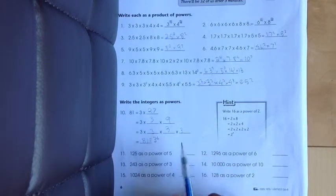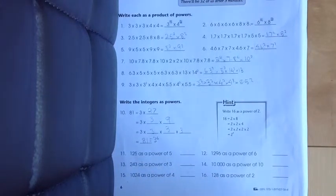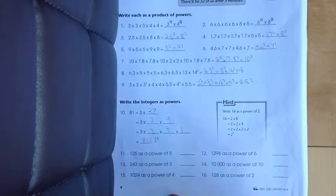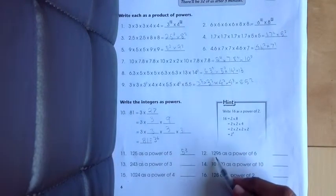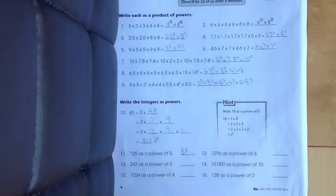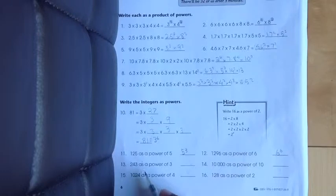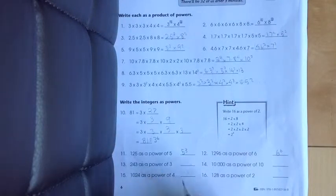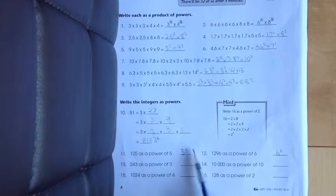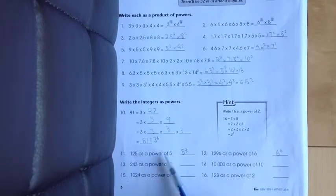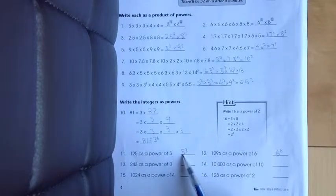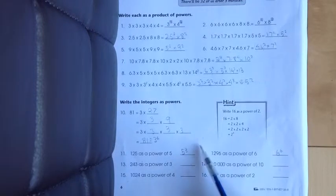Now let's move on to questions 11 to 16. 125 as a power of 5. You have to think of it yourself. Question 12, 1296 as a power of 6, think of it yourself. Question 13, 243 as a power of 3. I'll show you the first two answers: 125 as the power of 5 is 5 to the power of 3, because 5 times 5 is 25 times 5 is 125. And there are three 5's, so it's to the power of 3.